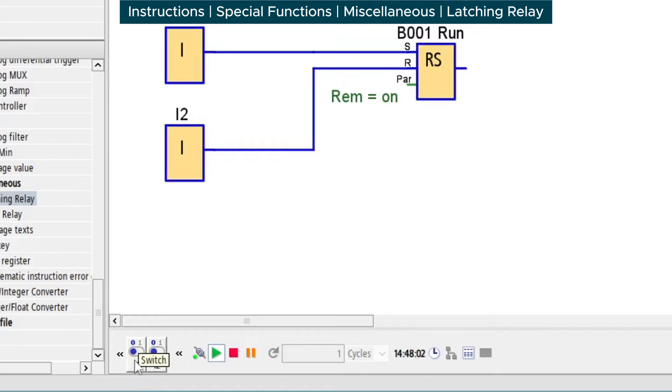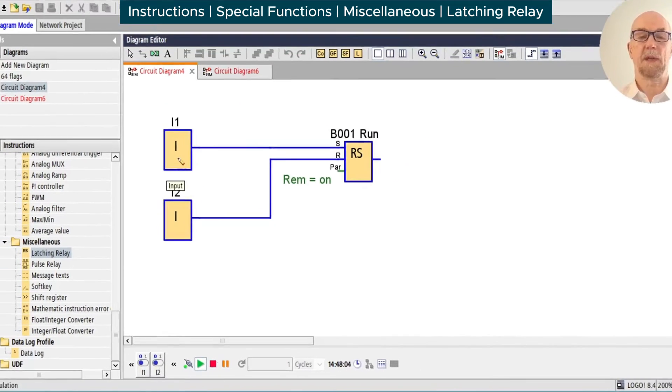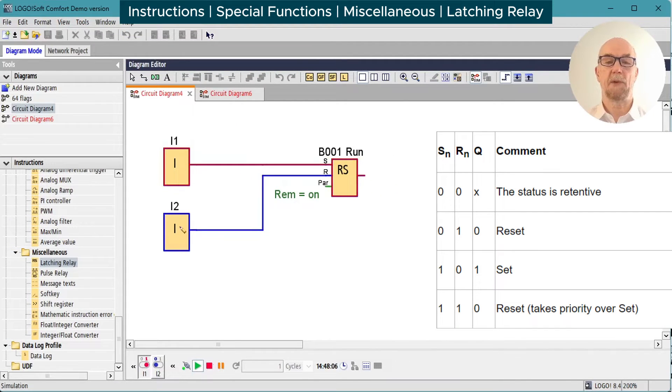With the simulation for the two input set of switches, we can now leave the set input on. Turn on the reset input. Note that the reset overrides the set. If we release the reset, because the set is still on, the output of the latching relay turns high, and normal operation resumes. Very useful.